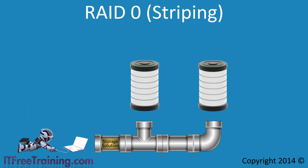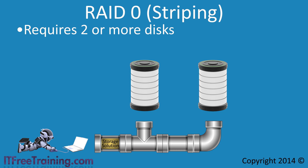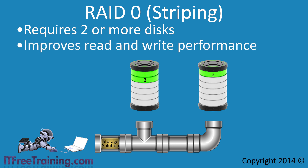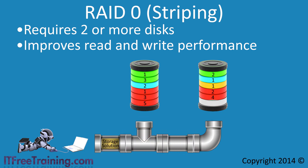The first RAID level I will look at is RAID 0, also known as Striping. This is when two or more drives are combined together and data is distributed across the drives in blocks. When a file is written to a RAID 0 drive, it is divided up into two parts and approximately half is stored on each drive. Since both drives can work independently of each other, this improves read and write performance. As more files are added, they are automatically divided up between the drives. With five drives using RAID 0, potentially all five drives could be working at once to read and write simultaneously.